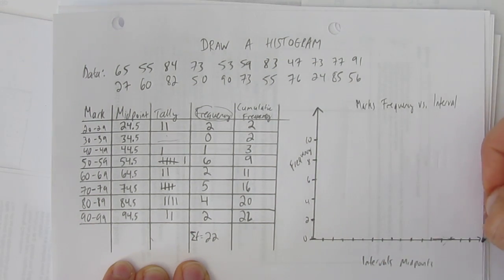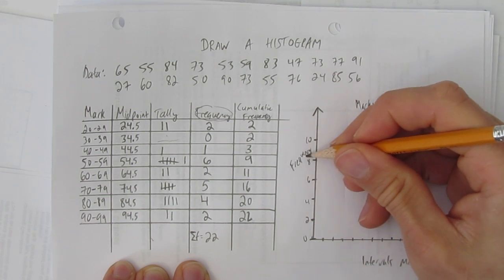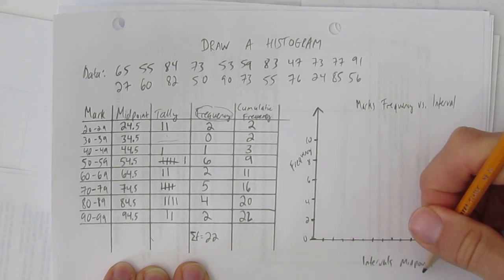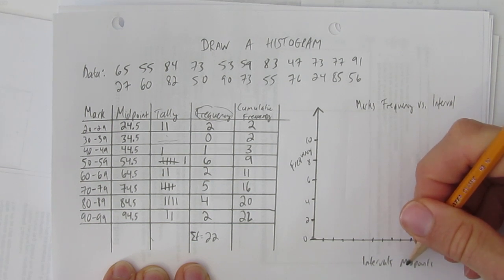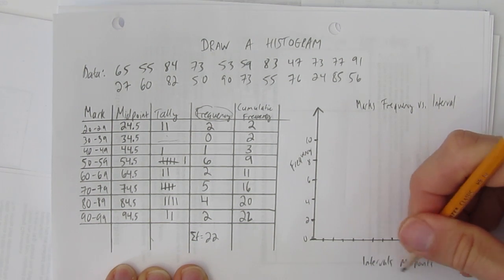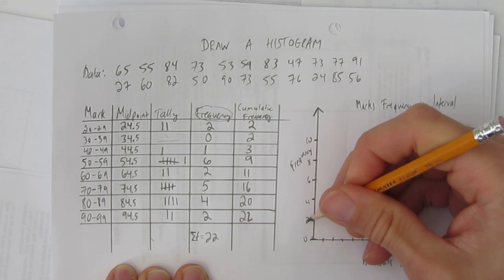Make sure to draw your axes. Make sure to put arrows on the axes. Make sure to label this frequency and this intervals, or the interval's midpoints. I'm going to use their midpoints. You'll see in a second. So, make sure to label this. And make sure to make a scale here.